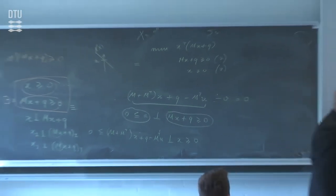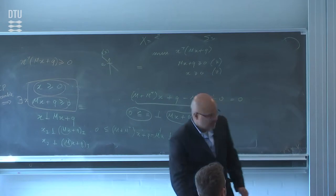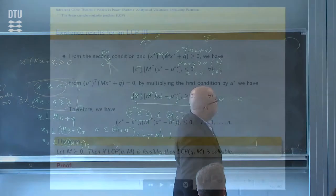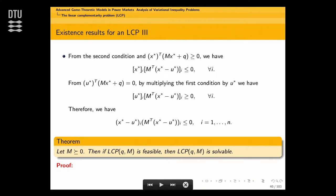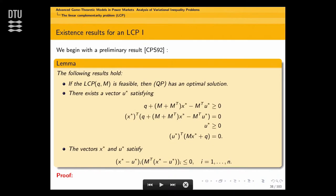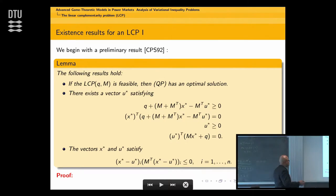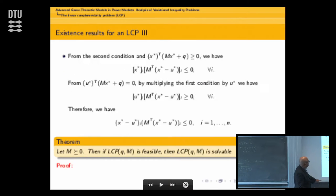Finally I need to show this result. The second result follows directly from the KKT conditions. I want to show: X-star minus U-star, the i-th component, times M-transpose times X-star minus U-star, the i-th component, is non-positive.